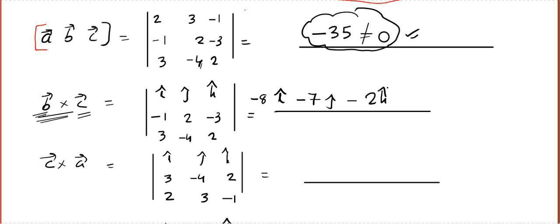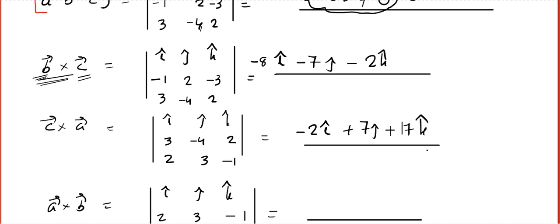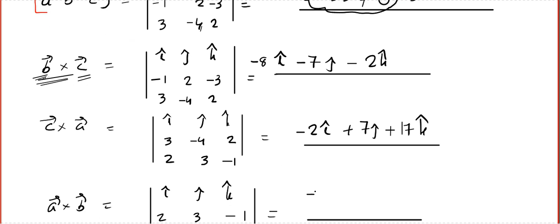And the next one, minus 2i plus 7j plus 17k. And the third one, minus 7i plus 7j plus 7k.